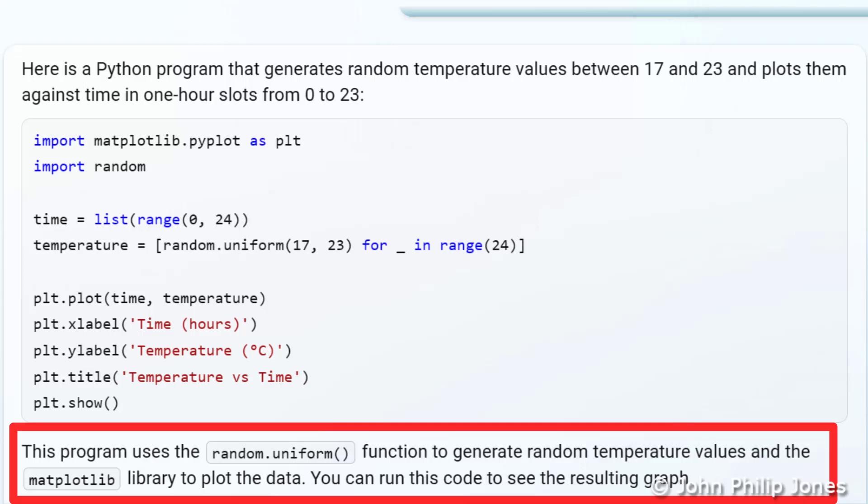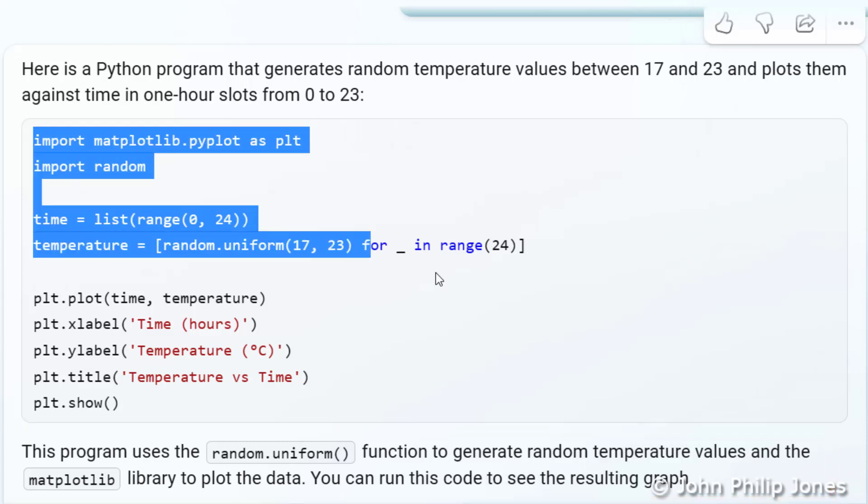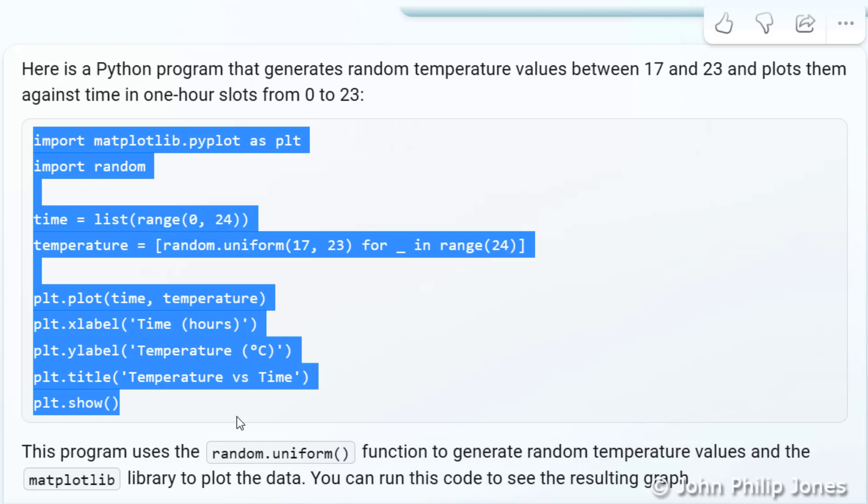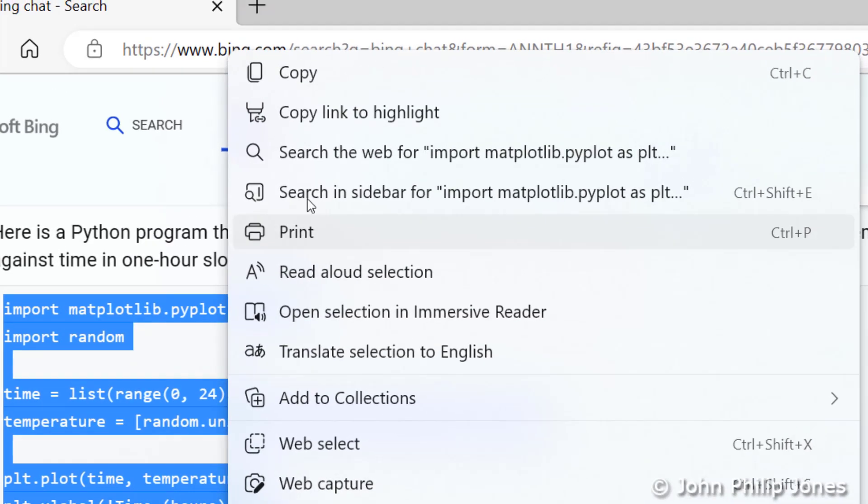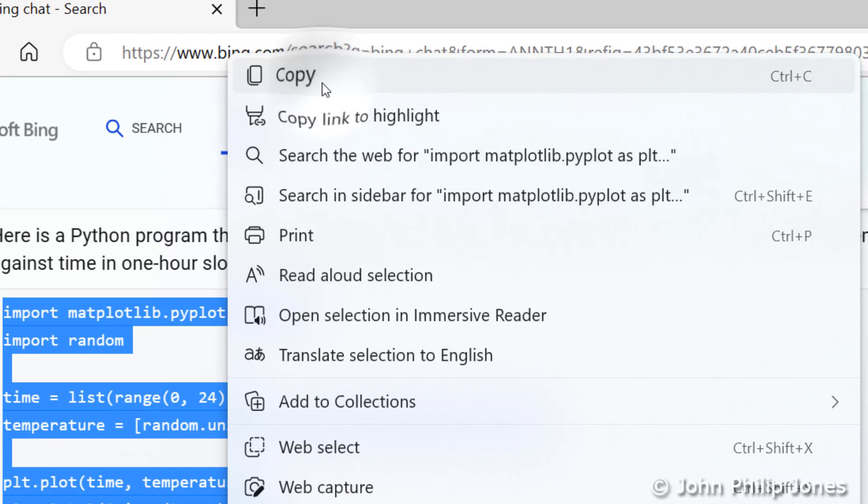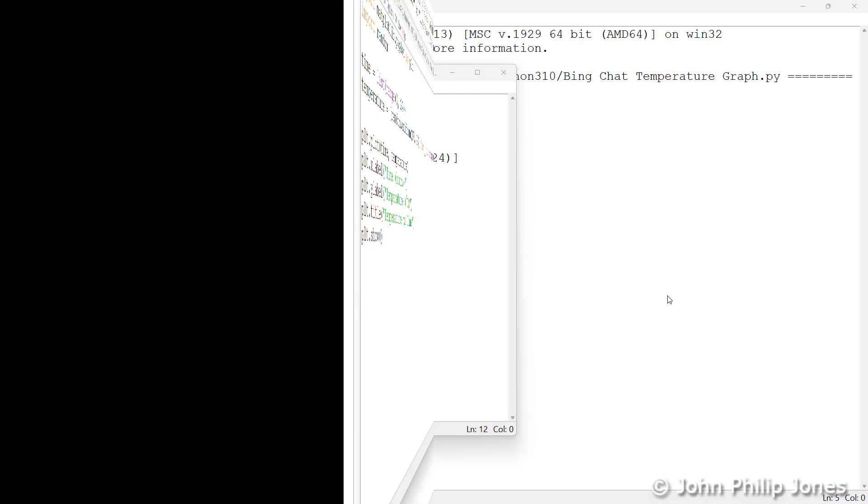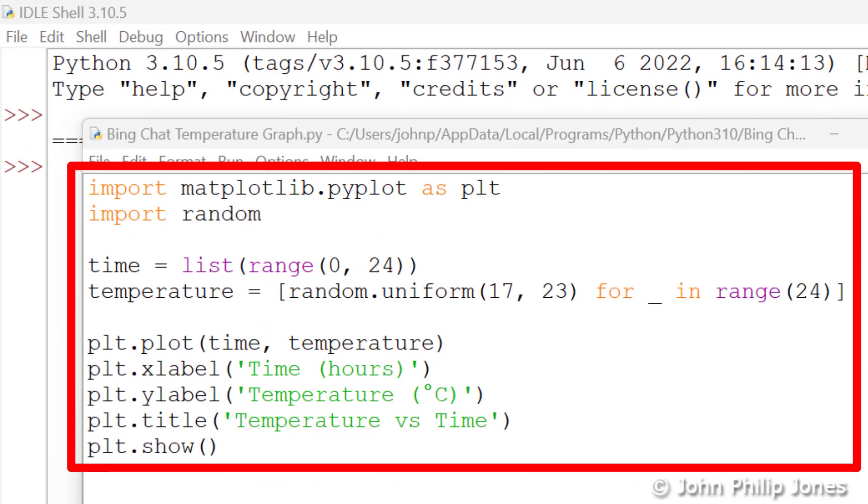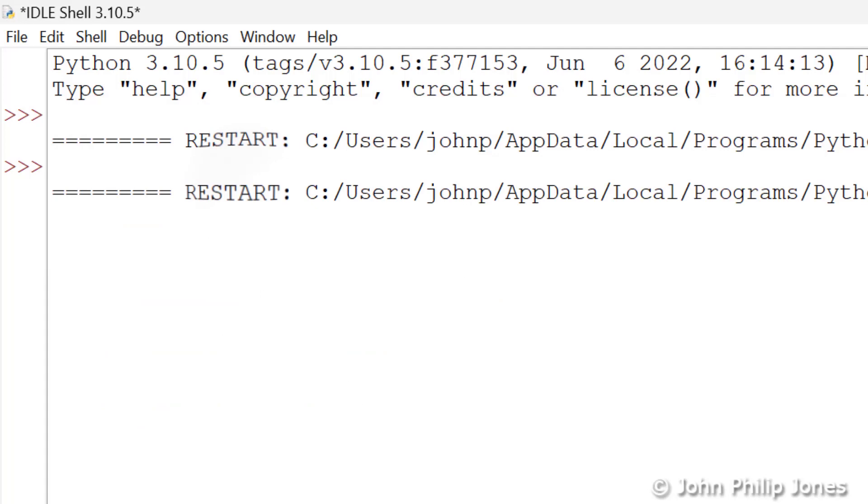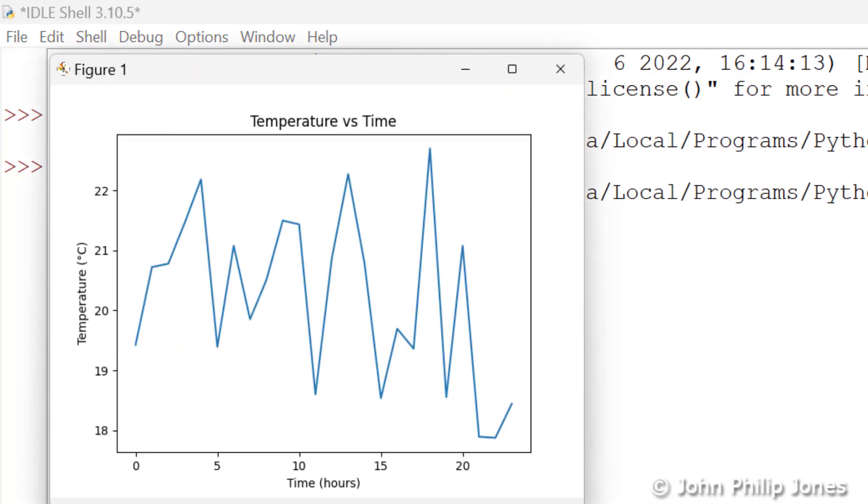So what I'm going to do now is to copy this code, which I'll simply do by highlighting it all by dragging my mouse, right-clicking on the mouse, coming up here to Copy, clicking on that. And now I can go across to an appropriate Python editor, paste this code in, and run it to see if indeed the program does what it's supposed to do. Here we can see the computer program. I've pre-saved it, so what I'm now going to do is come here to Run, click on Run, and we'll wait to see what we get.